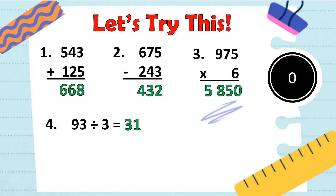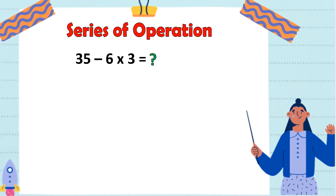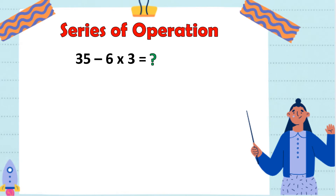Now, how about this one? The number sentence is 35 minus 6 times 3 is equal to blank. Paano natin ito isosolve? Ang 35 minus 6 times 3 ay isang halimbawa ng tinatawag nating series operation, dahil meron tayong dalawa o tatlong higit pang operation na gagawin. Ngayon, paano natin ito isosolve?